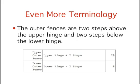The outer fences are 2 steps above the upper hinge and 2 steps below the lower hinge. The upper outer fence is 20 plus 2 times 4.5, which equals 29. The lower outer fence is 17 minus 2 times 4.5, which equals 8.